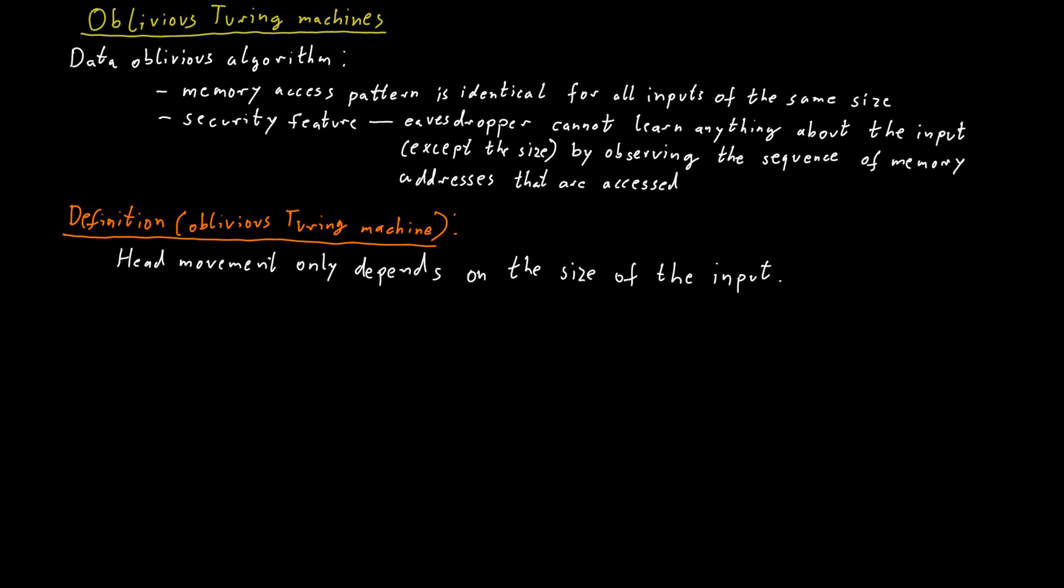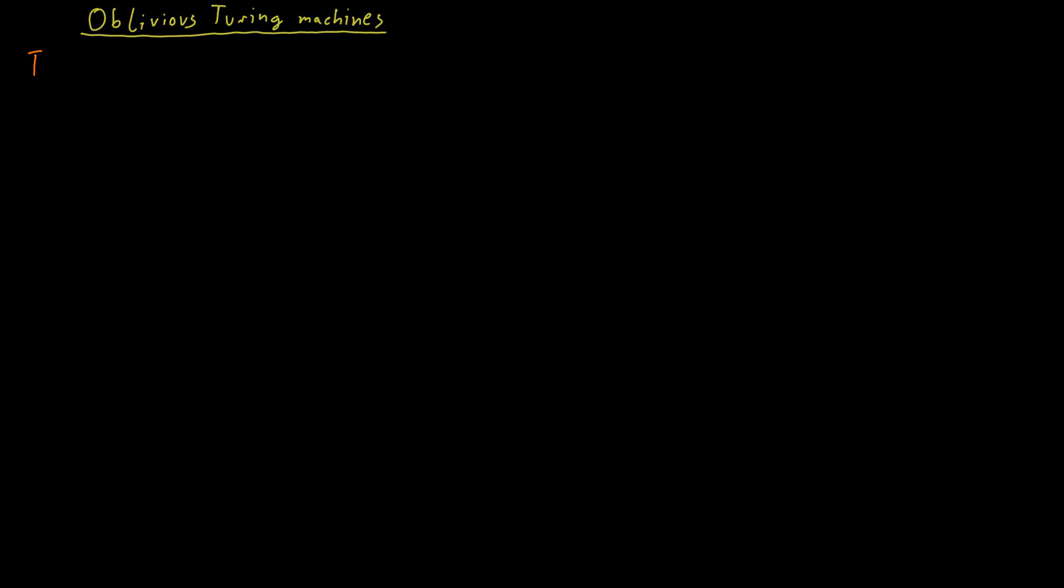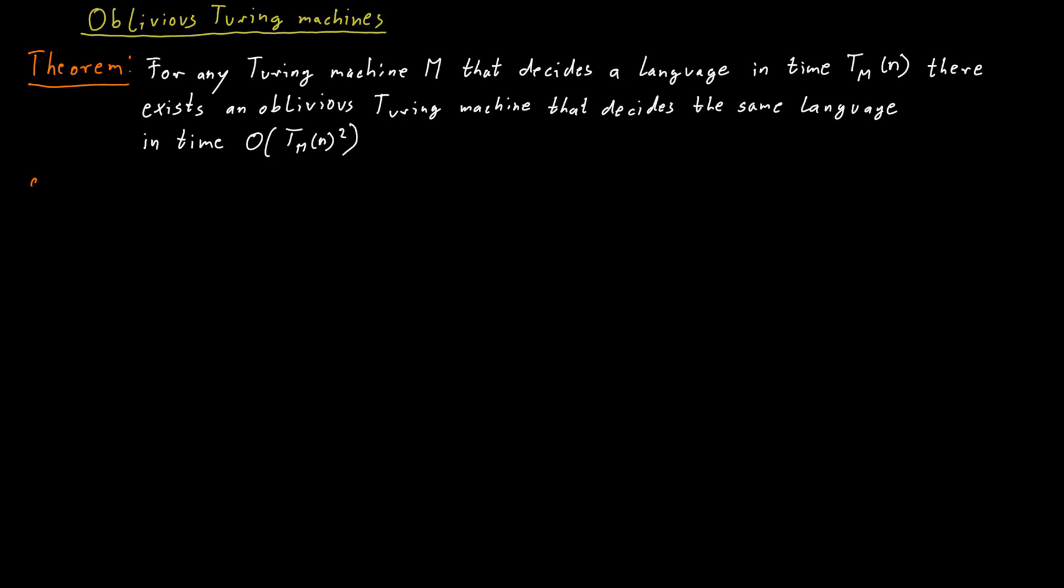It turns out that an oblivious Turing machine can simulate a standard Turing machine with only a polynomial slowdown. Specifically, for any Turing machine M that decides a language in time T_M(n), where n is the size of the input, there exists an oblivious Turing machine that decides the same language in time O(T_M(n)²).